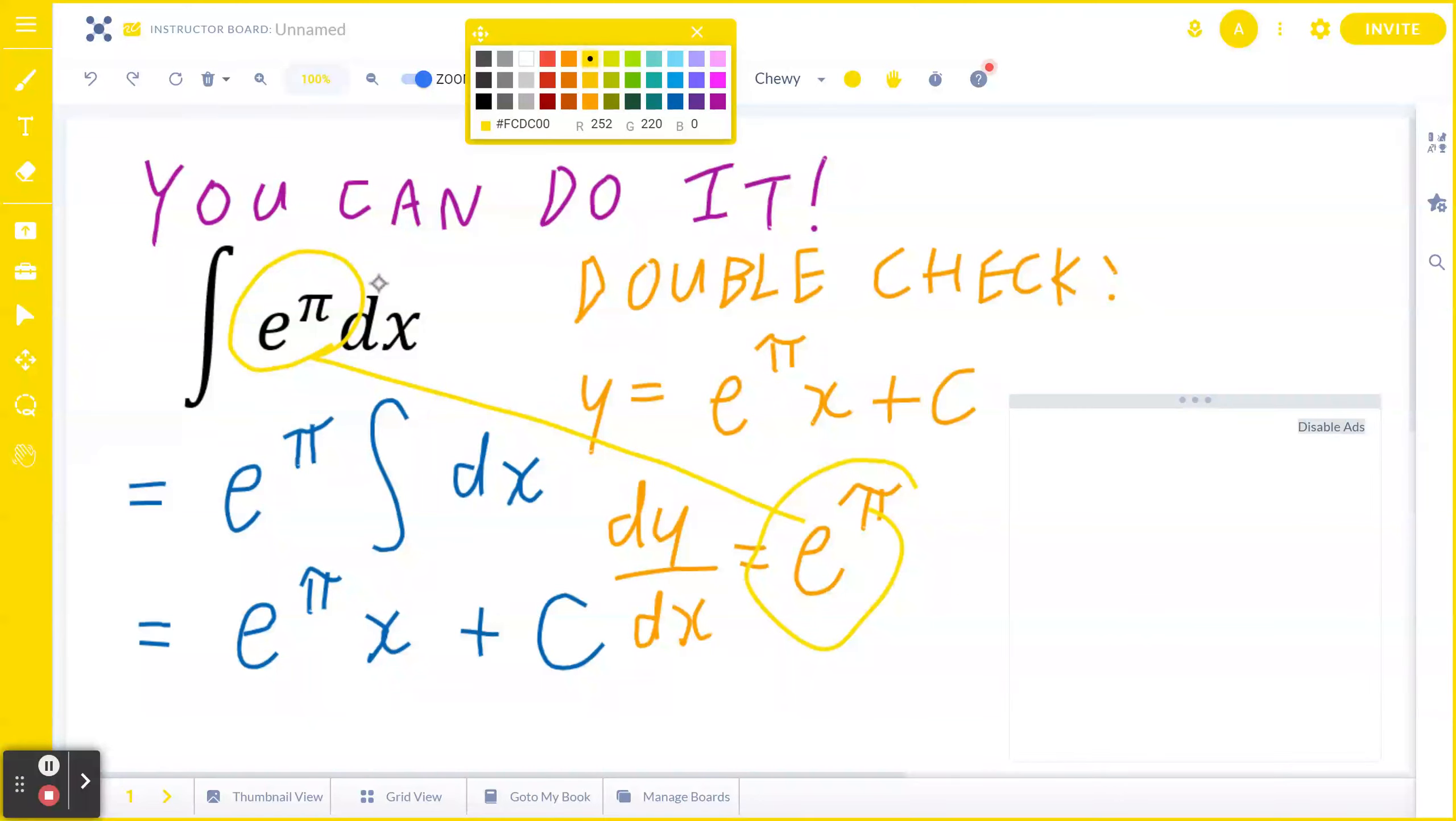So as expected, you get e to the power of pi back. I hope this makes sense.